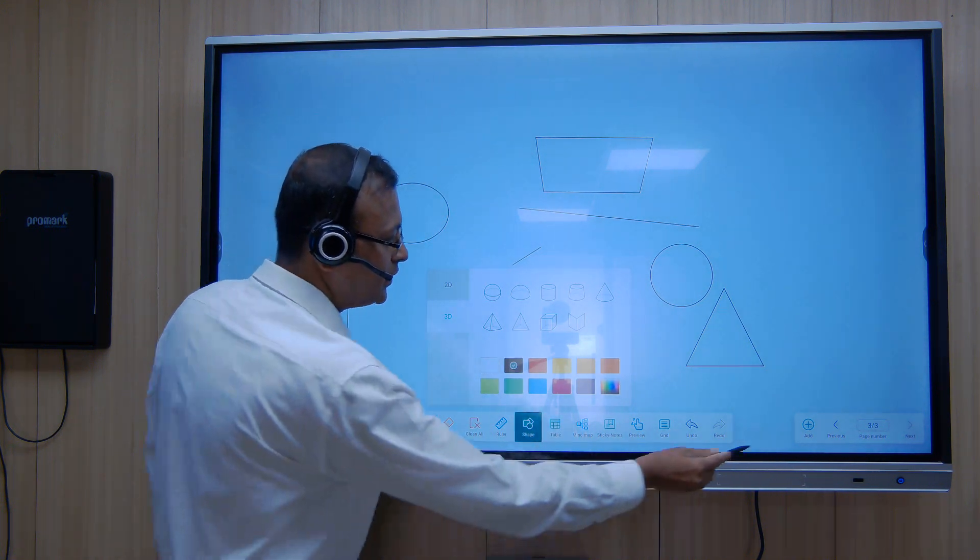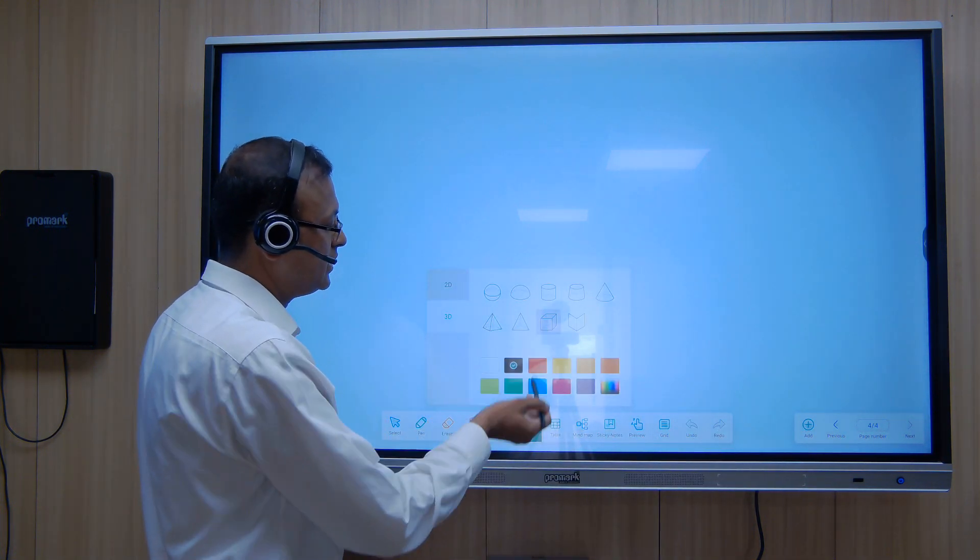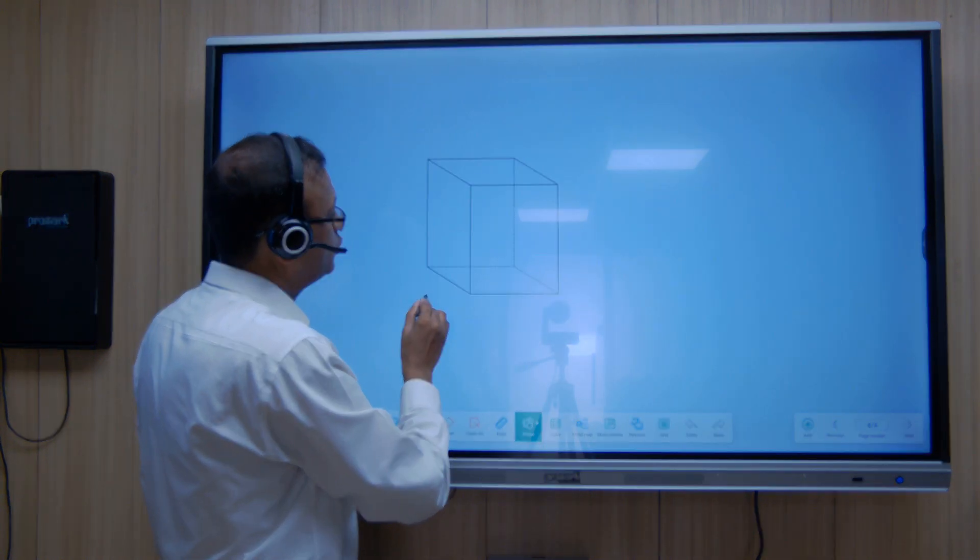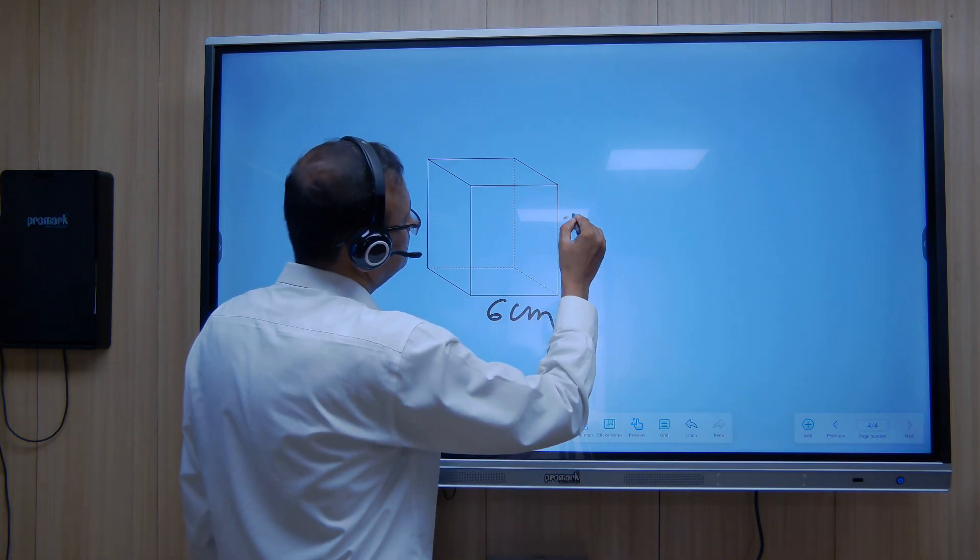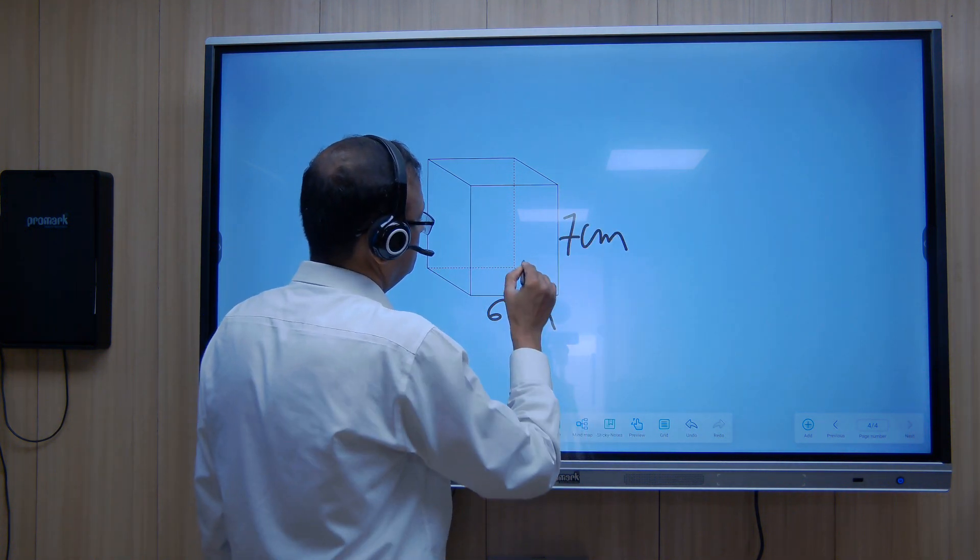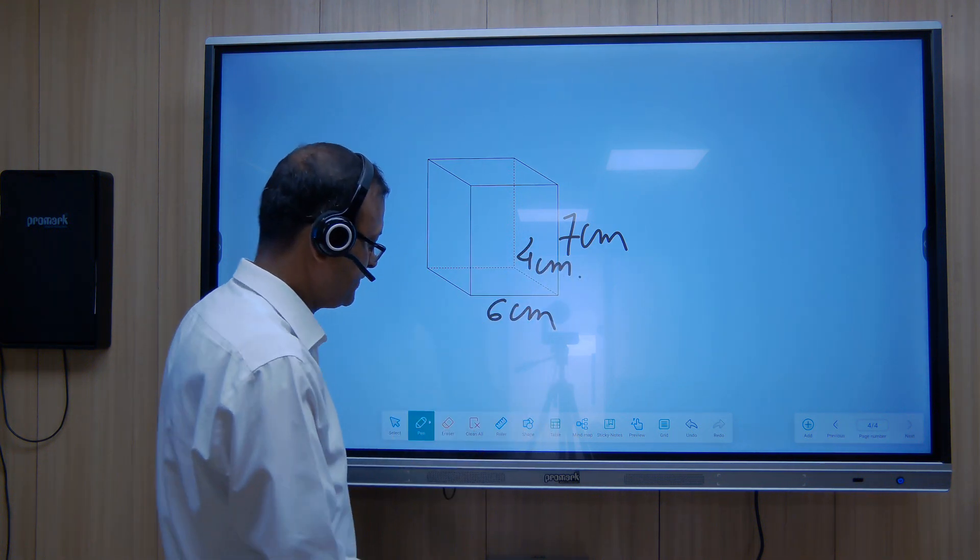Then we have the 3D function. Let me add another page. In this 3D function, you can see different figures. Let me take this cuboid. And if I want to write anything on it, I can write 4cm. This is the cuboid.